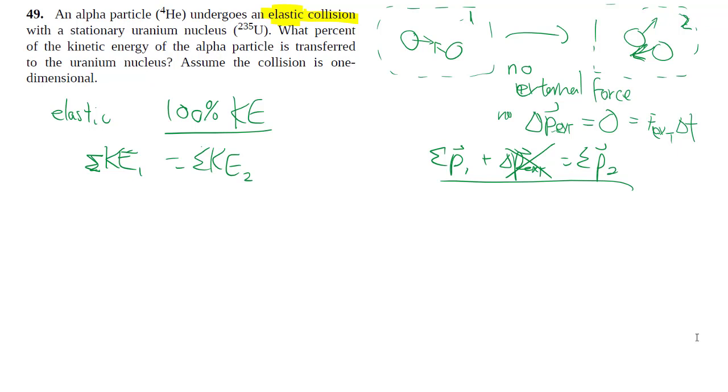This gives us two separate equations to work from. I find this question interesting because we're talking about something fairly light hitting something really heavy, so we can see what happens when a light thing, even moving really fast, hits a very heavy thing.